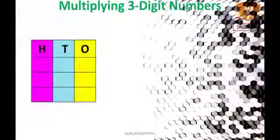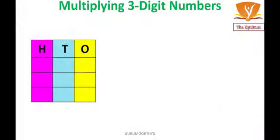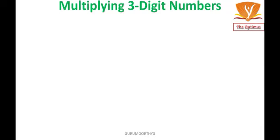Dear kids, do you remember the parts of multiplication? The number to be multiplied is called the multiplicand. The number by which we multiply is called the multiplier. The result of multiplication is called the product.